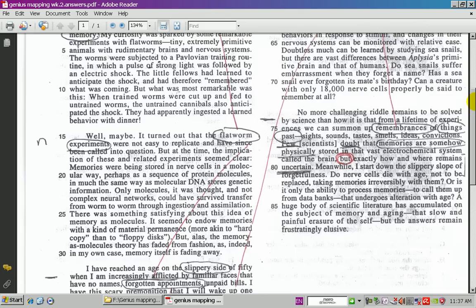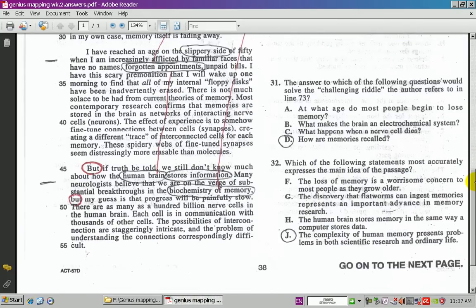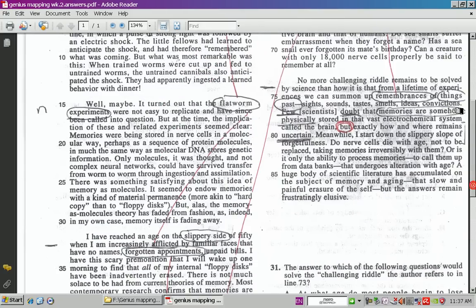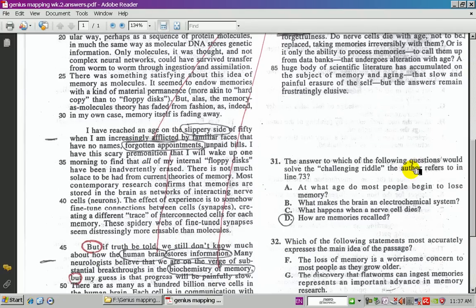Let's come down and take a look at some particular questions here, starting with 31. 31 says, the answer to which of the following questions would solve the challenging riddle the author refers to in line 73. So line 73, we come back, take a look at line 73. Line 73 is, the challenging riddle remains to be solved. The challenging riddle of what? The challenging riddle of the big picture, which has to do with memory. So you come over here, and we can cross out stuff that has nothing to do with memory whatsoever.